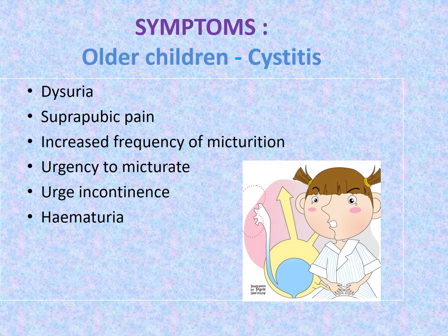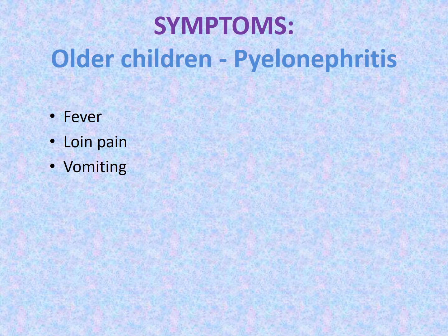Older children with cystitis typically complain of dysuria, suprapubic pain, increased frequency of micturition, urgency to micturate, urge incontinence, or hematuria. Those with pyelonephritis usually have high-grade fever associated with loin pain, and may also have nausea and vomiting.